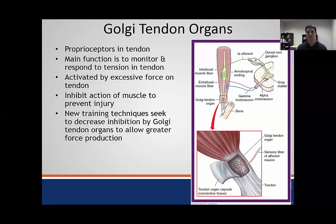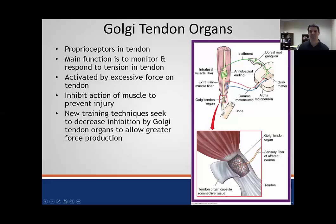The GTO does have the ability to affect the alpha motor neurons—those are the ones innervating our normal contracting extrafusal skeletal muscles. These Golgi tendon organs are really important in inhibiting muscle action to prevent injury. The idea is that at some point during really high excessive force, your body recognizes that if you keep producing this much force, the tendon could actually rip from the bone. Therefore, the Golgi tendon organs act as a safety mechanism to prevent that.